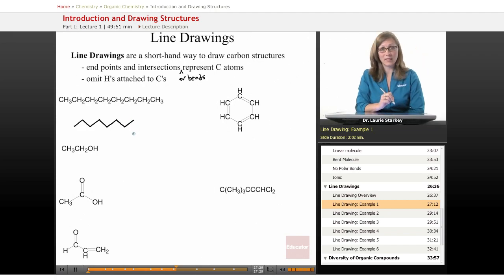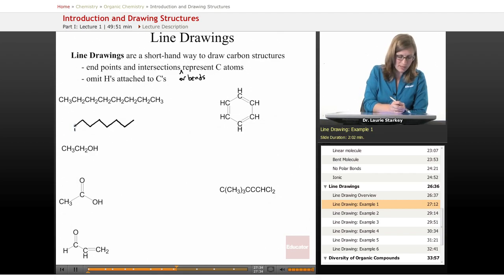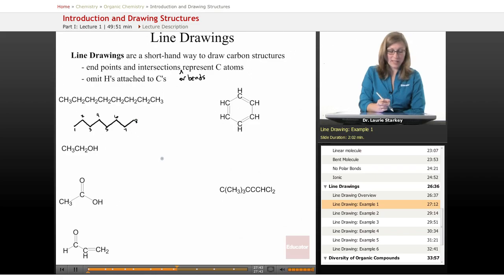So this zigzag line, or line drawing notation, represents eight carbons. This end carbon, this end point is a carbon, and any bend here or intersection of these two lines, two, three, four, five, six, seven, eight.